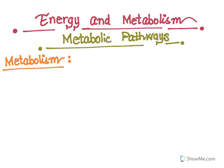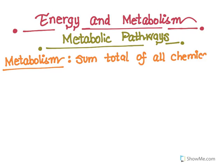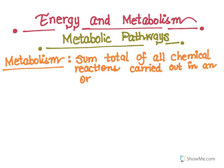The basic definition of metabolism is it is the sum total of all of the chemical reactions carried out in an organism. Now we are going to take a look at what are the two main types of metabolism, and metabolism is actually going to be the sum of these two types.